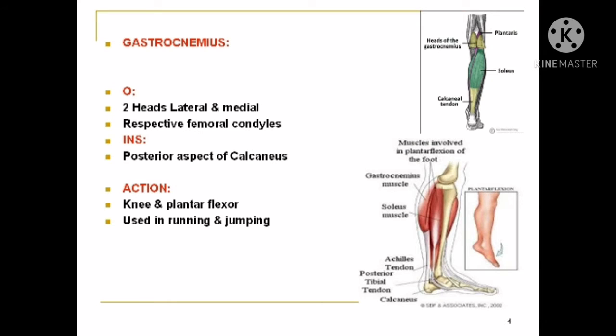The gastrocnemius muscle arises by two heads from the lateral and medial femoral condyles respectively. The insertion is upon the posterior aspect of the calcaneus. Its action is knee flexion and plantar flexion. It is used in running and jumping.